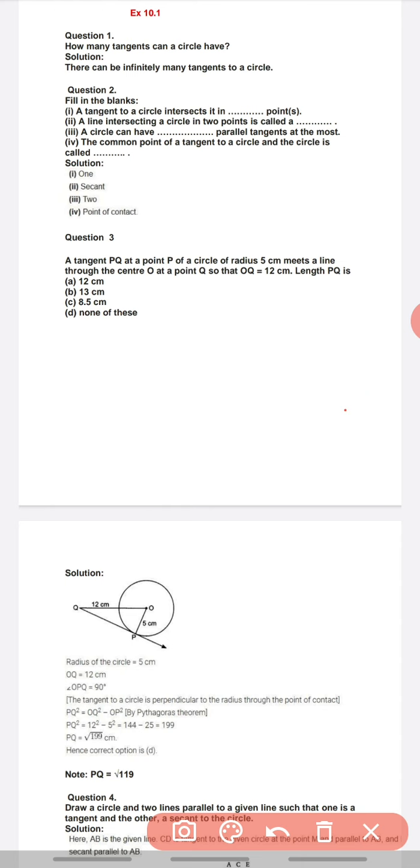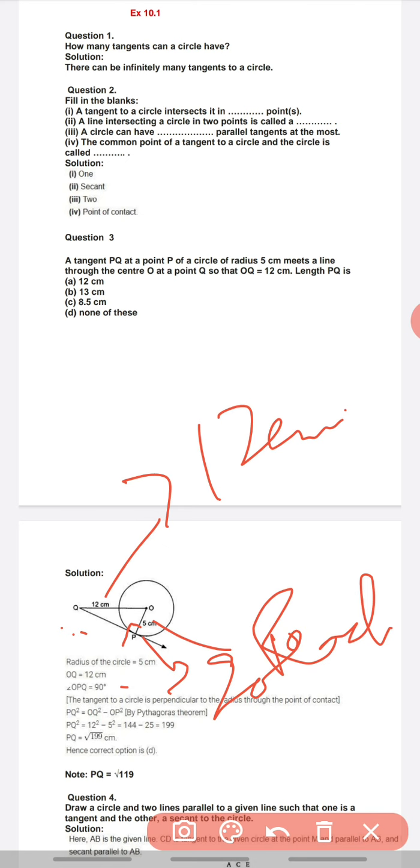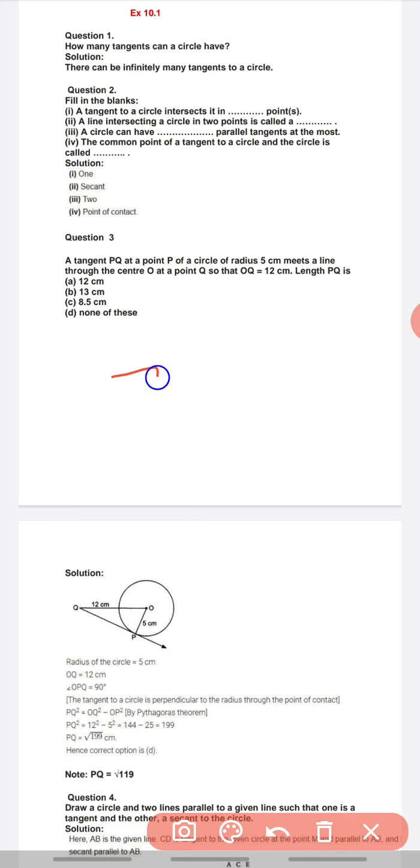Dekhiye, circle diya hua hai with center O. OP dekhiye, OP is 5 cm, that's the radius. Ye 5 cm hai aur point Q ek hai jo outside the tangent hai. From the center of the circle to this point it is 12 cm. Now we have to find QP. Remember my theorem first: A radius is always perpendicular to a tangent. That means yaha pe jo hoga that will be 90 degrees.